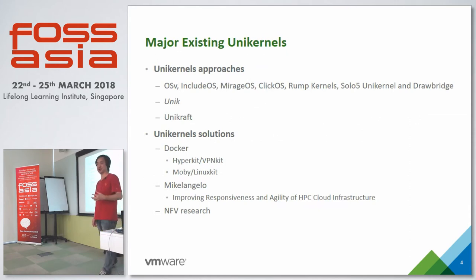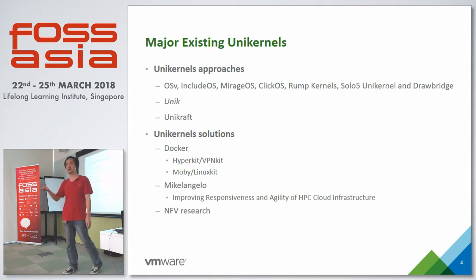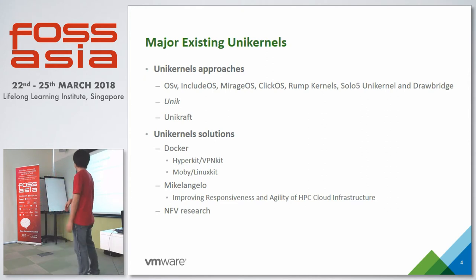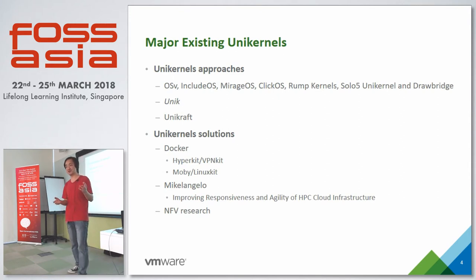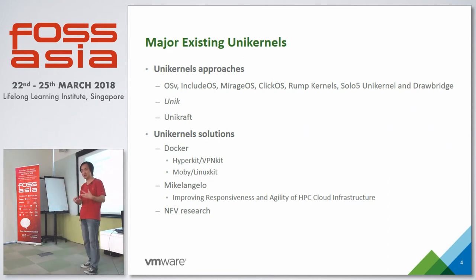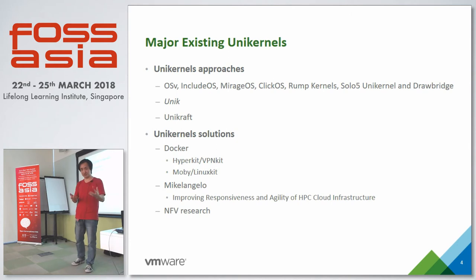There are a lot of existing Unikernels - some names here like OSV, IncludeOS, and others. Drawbridge is from Microsoft. Unikernel Systems is actually a tool that helps you compile applications to some existing Unikernels, supporting three existing Unikernels. Unikraft is a separate project launched last year. They think the fundamental drawback to Unikernels is the additional effort needed to build an application to a Unikernel, so they're trying to provide a library pool - some libraries for architecture, some for platform or filesystem - and a build system to help you build a Unikernel image from selected libraries.